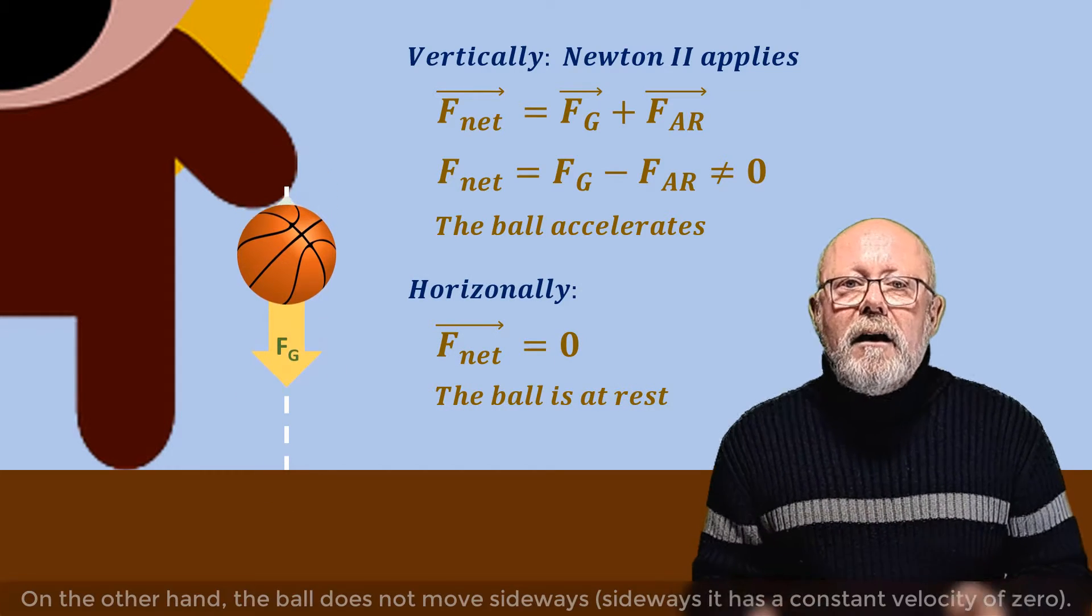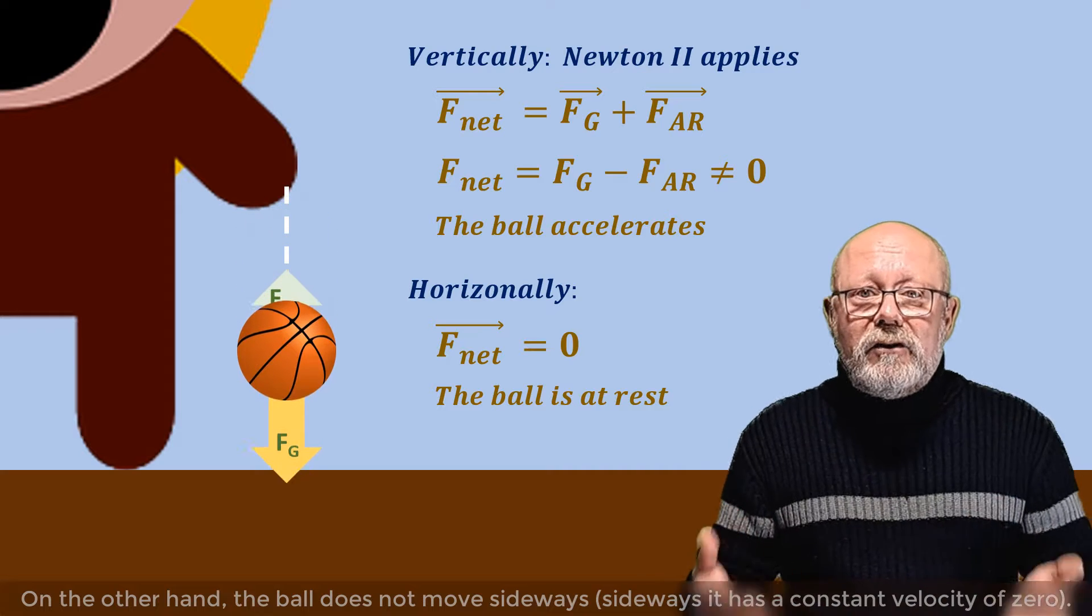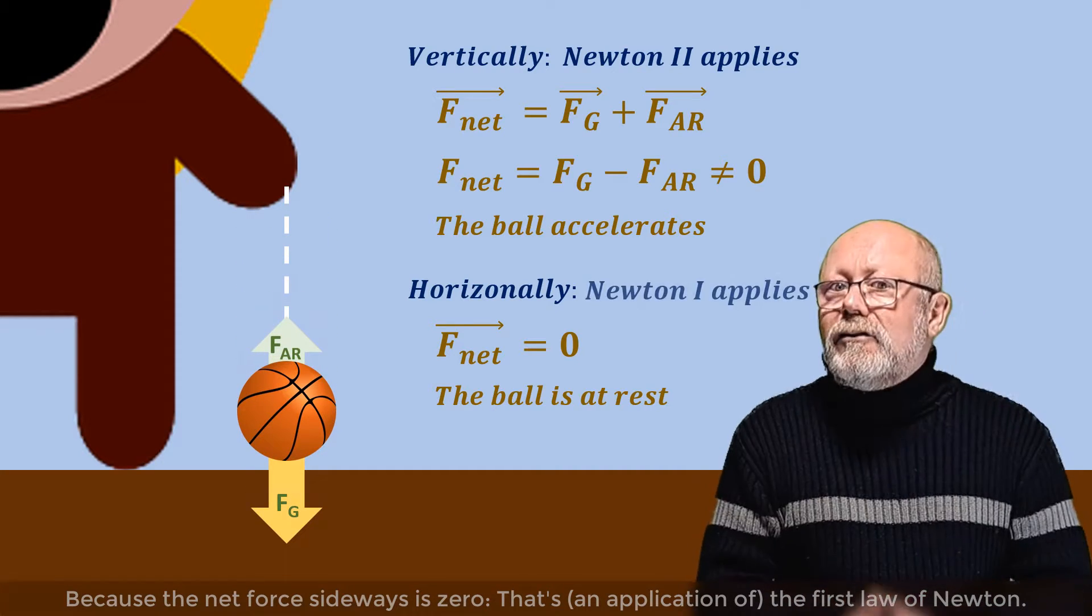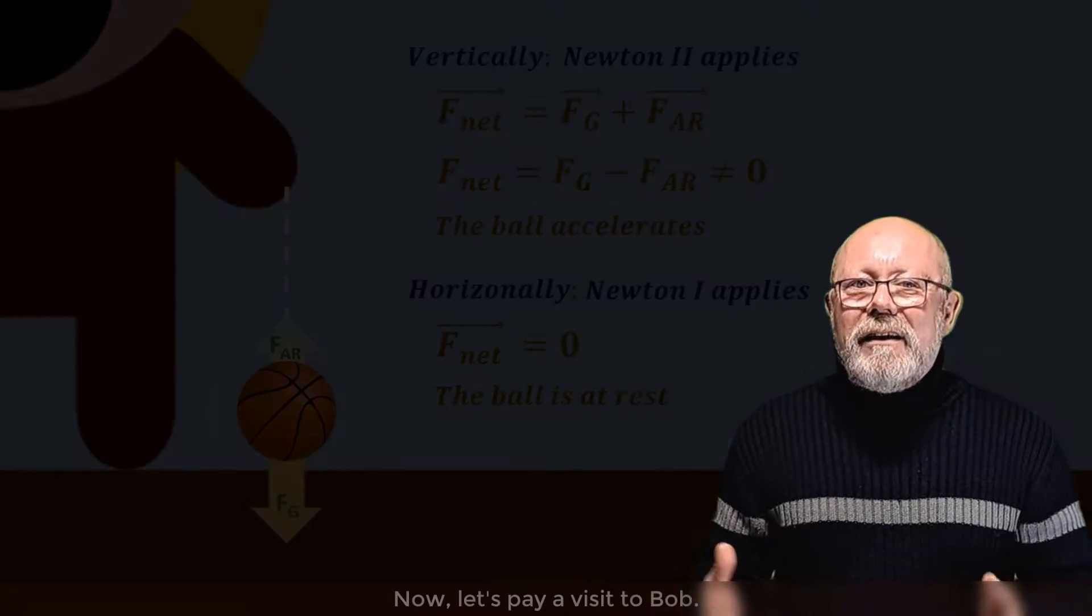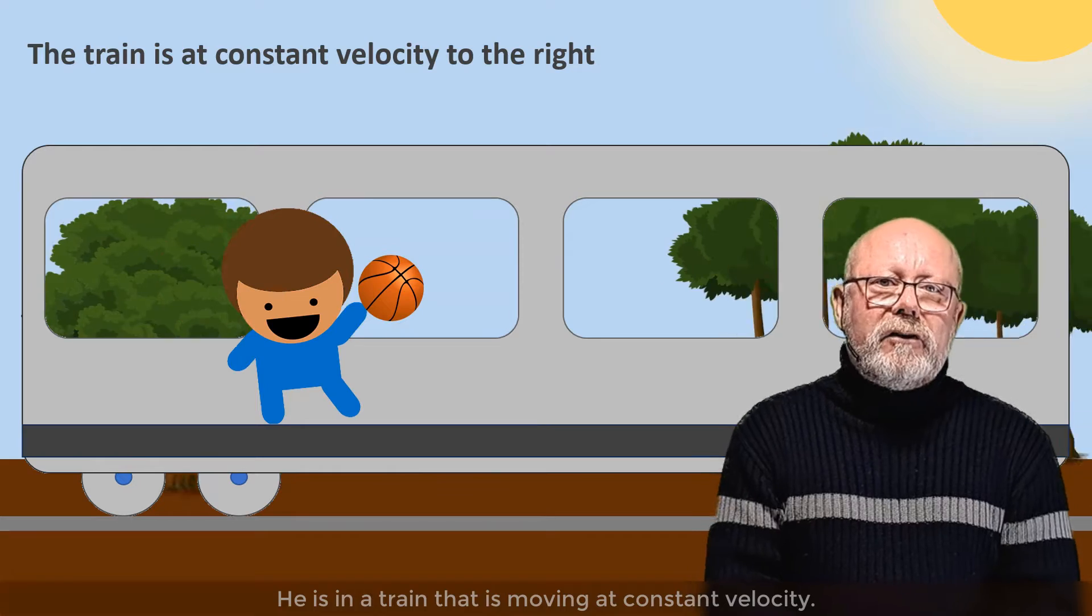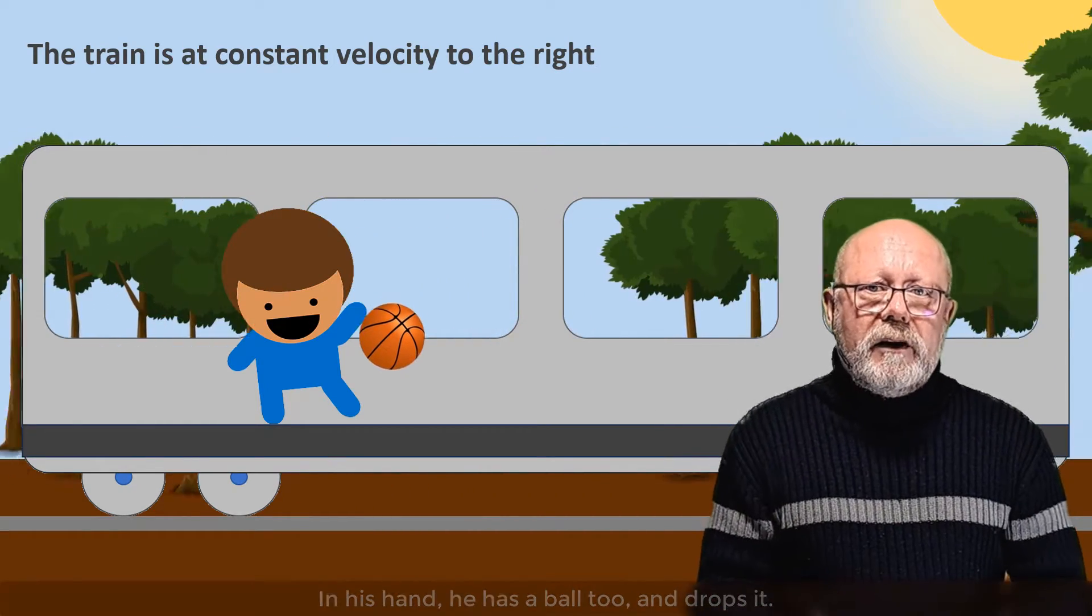On the other hand, the ball does not move sideways. Sideways, it has a velocity of zero. Therefore the net force sideways is zero. That's the first law of Newton. Now, let's pay a visit to Bob. He is in a train that is moving at constant velocity. In his hand, he has a ball too, and drops it.